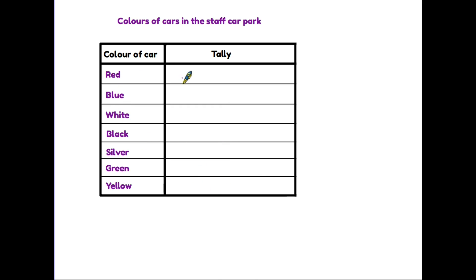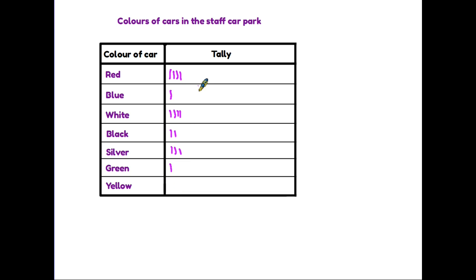Let's assume that the first car in the car park that we see is a red car. All we need to do very quickly is put a one for a red car. As we move through the car park we then see cars of different colors — a blue one, two white ones, two silver ones, a black one, another two red ones, and so on. We are building up a picture of all the different colors of cars.